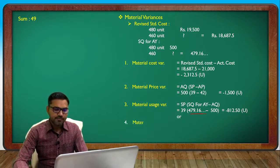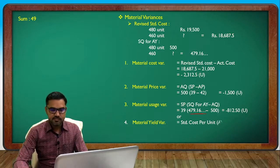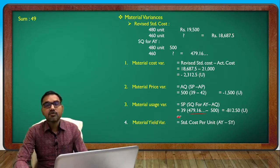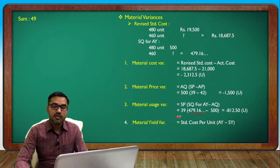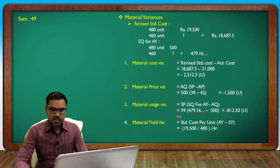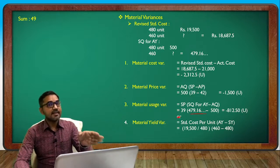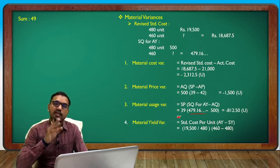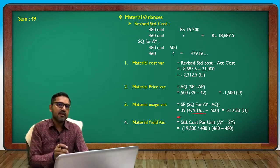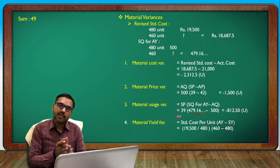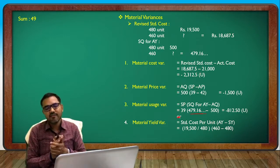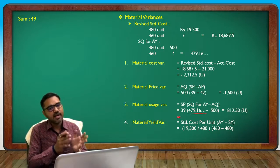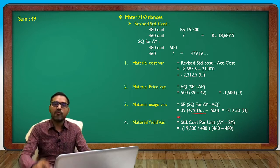Material yield variance formula: standard cost per unit multiplied by actual yield minus standard yield. Standard cost is 19,800 divided by 480. Standard cost per unit for 480 units: 460 actual, 480 standard. Standard cost 19,500 divided by 480.